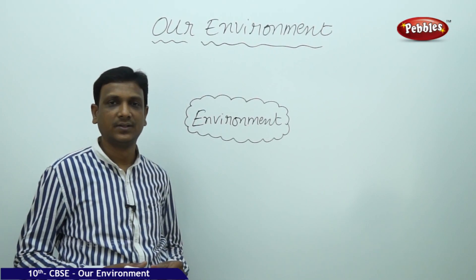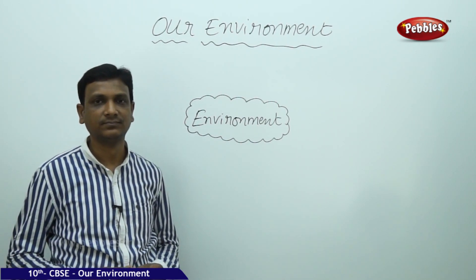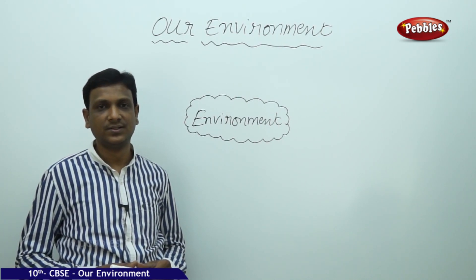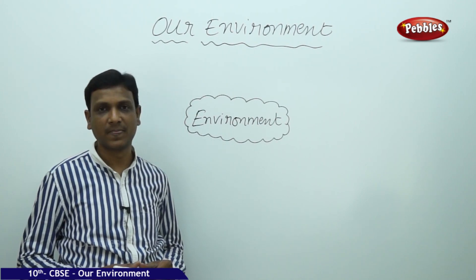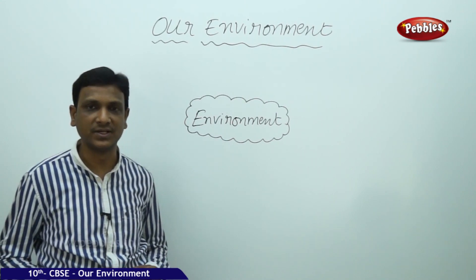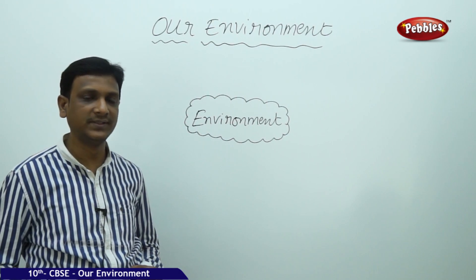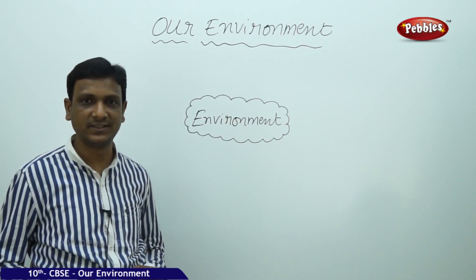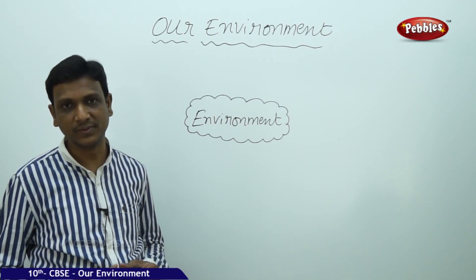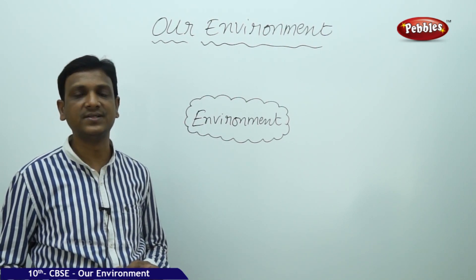In this chapter, 'Our Environment,' we are going to discuss the various issues connected to the environment. We know different things about our environment, and we notice that there are so many changes happening in the environment which are affecting our life. We learn about this in the news and newspapers — changes affecting the life of people, other organisms, other animals. The diversity is also affected.